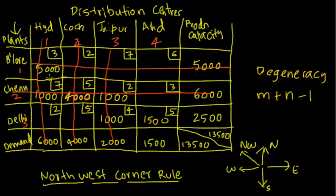Yes — one, two, three, four, five, six basic variables. A basic variable means we have shipped units from some plant to some distribution center. These are the six routes used, and we have shipped the stated units along these routes. These six routes are considered basic variables. We have six basic variables, which means we are not in a state of degeneracy. That's the end of the Northwest corner rule. Thank you very much.